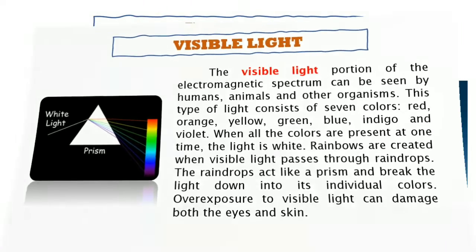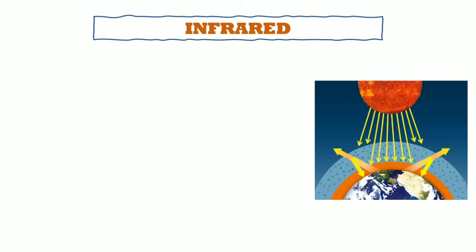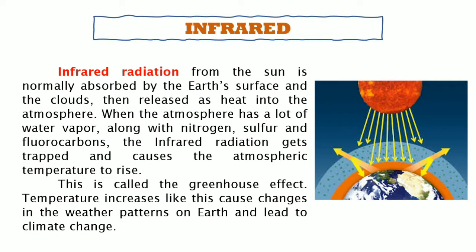Infrared radiation from the sun is normally absorbed by the Earth's surface and clouds, then released as heat into the atmosphere. When the atmosphere has a lot of water vapor along with nitrogen, sulfur, and fluorocarbons, the infrared radiation gets trapped and causes atmospheric temperatures to rise. This is called the greenhouse effect. Temperature increases like this cause changes in weather patterns on Earth and lead to climate change.